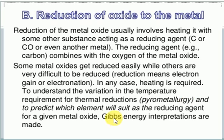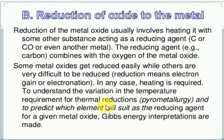Another approach is using a more reactive metal to reduce a metal oxide — this is called the thermodynamic displacement reaction. A well-known example is the aluminum thermite process, where magnesium is used for the reduction of iron. This is like a displacement reaction where the more reactive metal displaces the less reactive one. The best reducing agent is determined by Gibbs free energy.